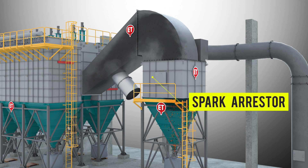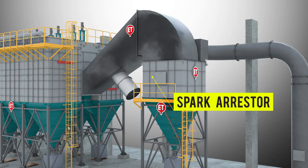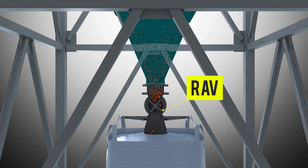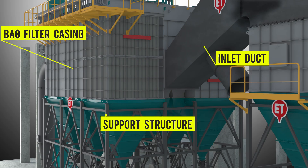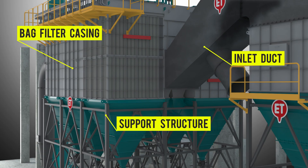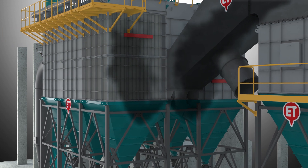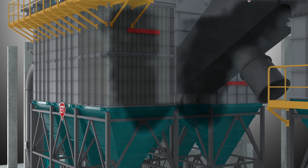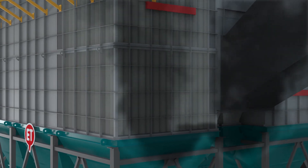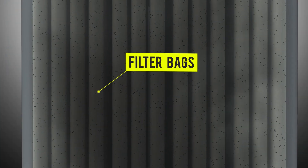Heavy dust particles and sparks are cooled and separated in the spark arrestor. Here is a close-up of what is happening inside the bag filter chamber.